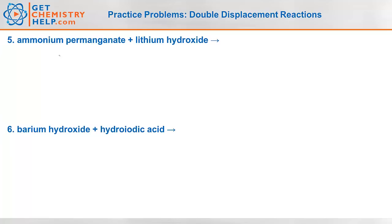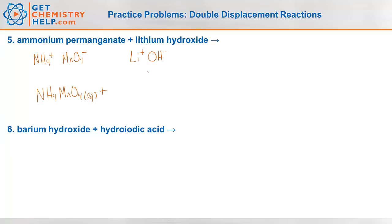How about ammonium permanganate reacts with lithium hydroxide? Ammonium is NH₄⁺ and permanganate is MnO₄⁻, so ammonium permanganate is NH₄MnO₄ — aqueous because all ammoniums are soluble. Lithium is in group 1, so 1⁺. Hydroxide is OH⁻, so lithium hydroxide is LiOH. All lithium-containing compounds are soluble, so aqueous.